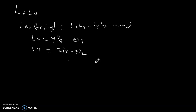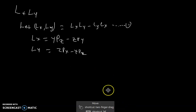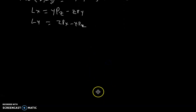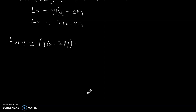Pay attention to this. Now we want to find the values of LX·LY. Remembering that LX is YPZ minus ZPY, we multiply this by LY which is ZPX minus XPZ. So call this equation 2.